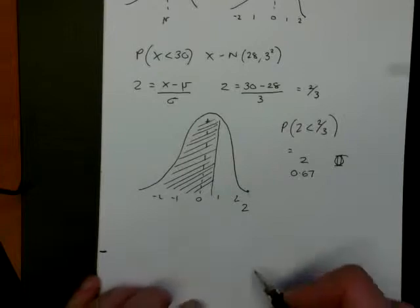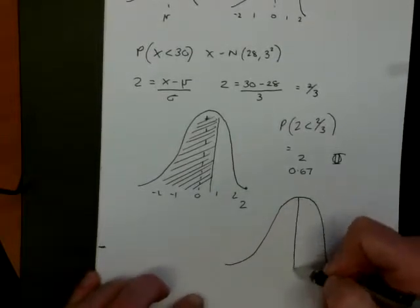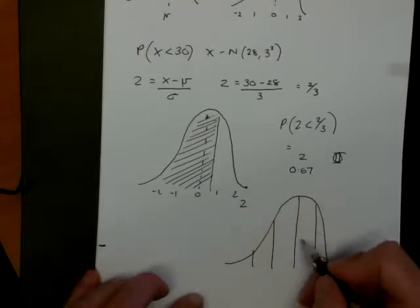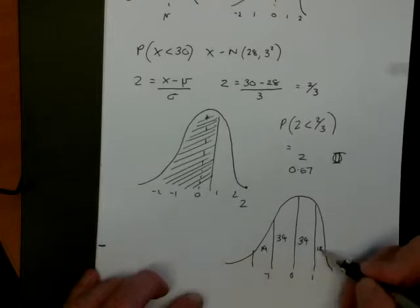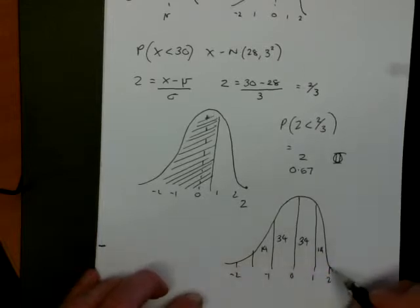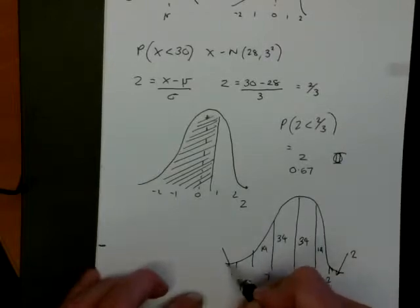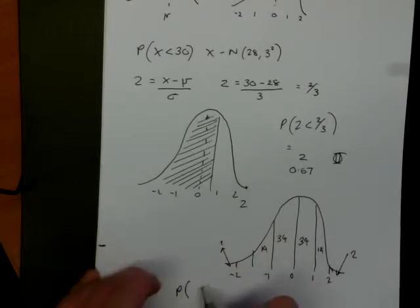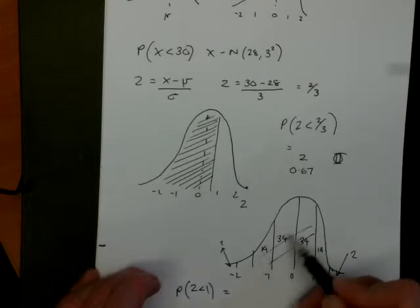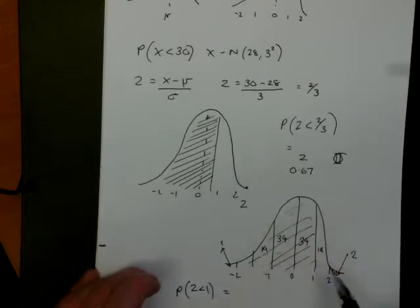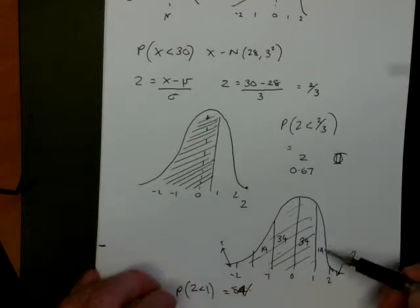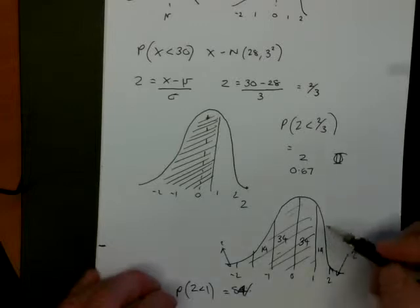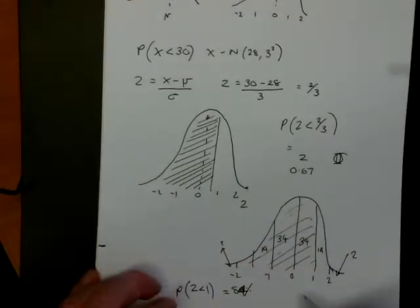Just to remind you — and it's really good to know this because you'll know if your answer is correct — actual percentages work out like this. You have 34% between 0 and 1 standard deviation above or below the mean, 14% between the first and second standard deviation, and 2% left in the tail. So the probability that z is less than 1: we can add up 34, 34, and 14, giving 82 — so it's going to be close to 84%. It would have been easier to take the 14 and 2 away from 100 to get 84. But we're looking at not quite 1, so I imagine the answer's going to be close to 75%.